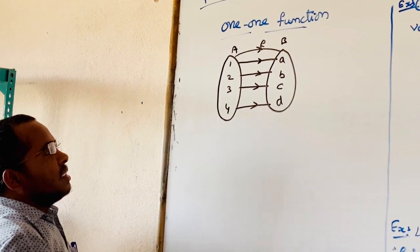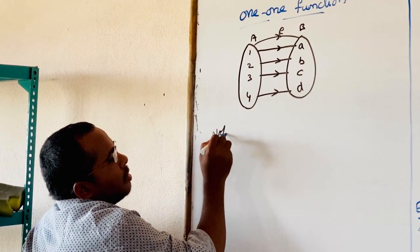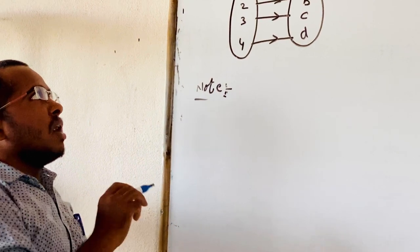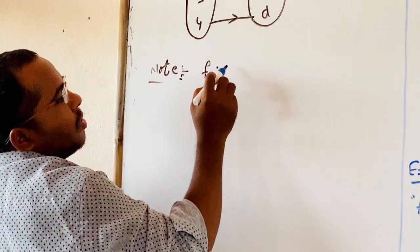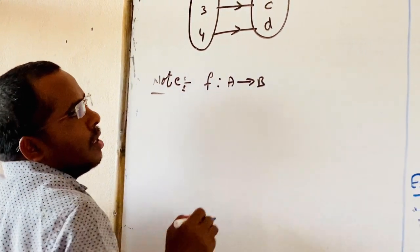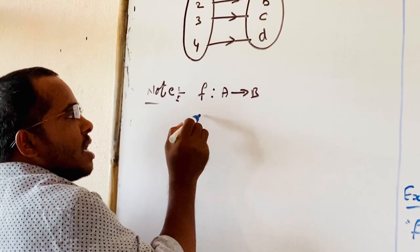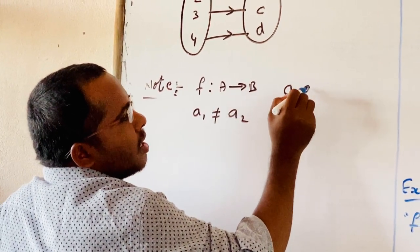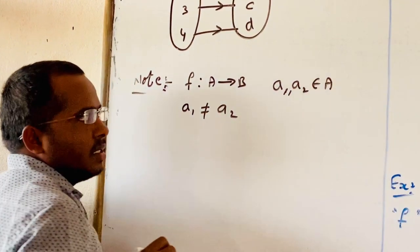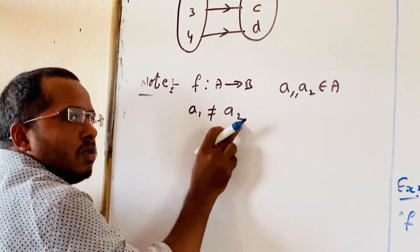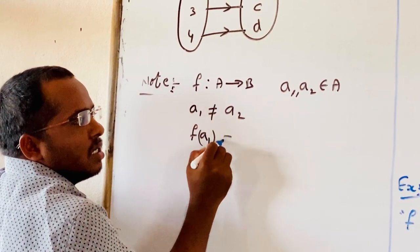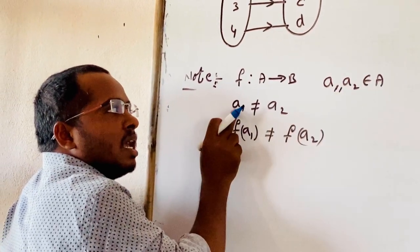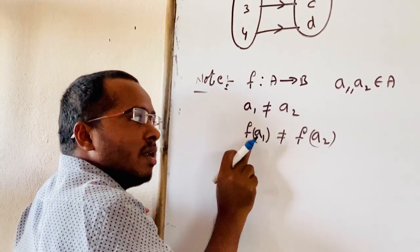Next, some important points. How to test whether a given function is a one-one function. If F mapping A to B is a one-one function, then for A1, A2 belonging to A: if A1 is not equal to A2, then F(A1) is also not equal to F(A2). That means different elements of set A have different images.